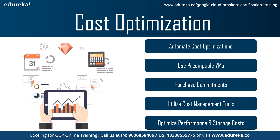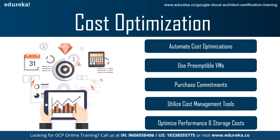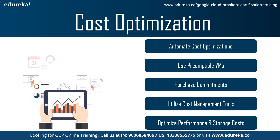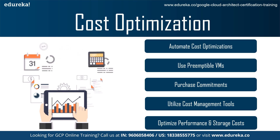The third one is purchase commitments. Sustained usage discounts are a major differentiator for GCP — they apply automatically once your instance is online for more than 25% of the monthly billing cycle and can net you a discount of 30% depending on instance type. Committed use can get you a discount of up to 57% for most instance types and up to 70% for memory-optimized types.